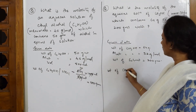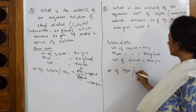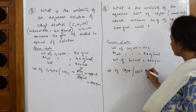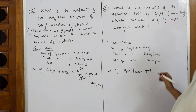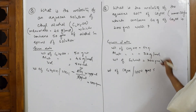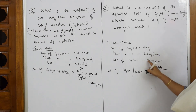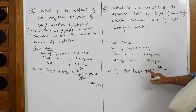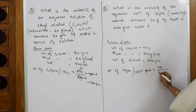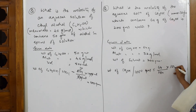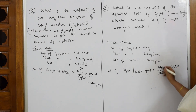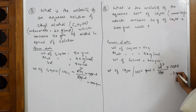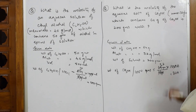For molality, calculate the weight of methanol per 1000 grams of solvent. Weight of methanol is 64, divided by solvent weight of 200, standardized to 1000. That gives 320 grams.